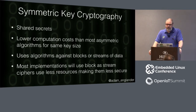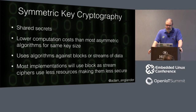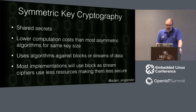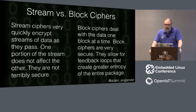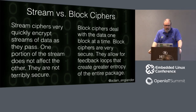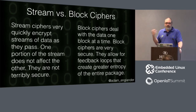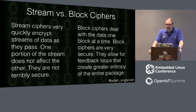Symmetric key cryptography uses algorithms against blocks or streams of data. Stream ciphers are less secure because they use fewer resources and thus are less computationally expensive. Stream ciphers encrypt streams in real time — one portion of the stream does not affect the other, so you're not getting that global entropy. Block ciphers deal with one block at a time; they're very secure as long as you're using the correct modes, because they allow for feedback loops that create entropy over the entire package. For block algorithms, use AES — it is US government approved, EU approved, FIPS standard, and NIST approved.